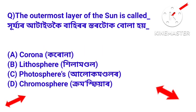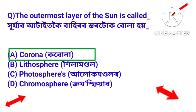Next question: the outermost layer of the sun is called what? Answer: Corona. The outermost layer of the sun is called the corona.